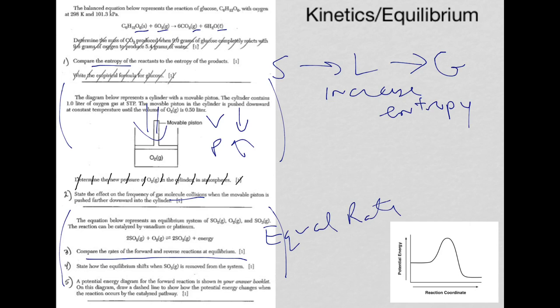For question four: State how the equilibrium shifts when SO3 is removed from the system. When you remove something from the system, the equilibrium shifts towards the side where you're removing something. So the shift in this case is towards the right.